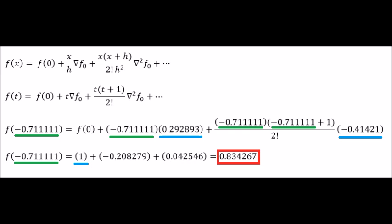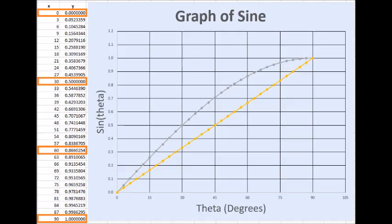Again, we can use the expression in the second line because h equals 1. Notice the difference in sign. We compute t plus 1 instead of t minus 1. Also, we are reading off a different row from our backward difference table. The answer in the fourth line, 0.834267, is the same as we got from forward difference. This is reassuring.